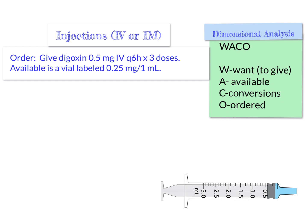Let's look at one more. This order says give digoxin 0.5 milligrams IV every 6 hours times 3 doses. Available is a vial labeled 0.25 milligrams per 1 mL. There is some extra information here — don't let it confuse you. It means we give this amount, 0.5 milligrams, on 3 separate occasions every 6 hours, only 3 times. The "times 3 doses" doesn't change how we set up this problem, so we don't even need that part.